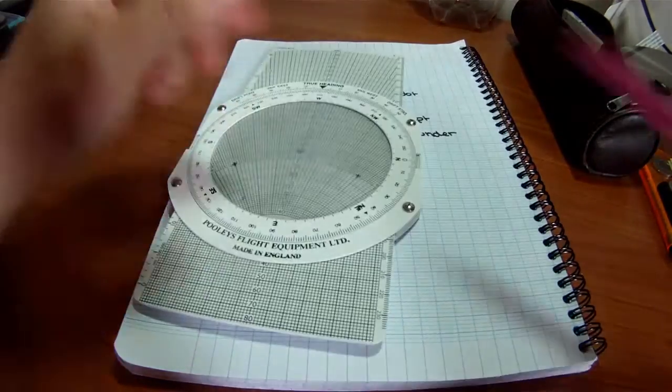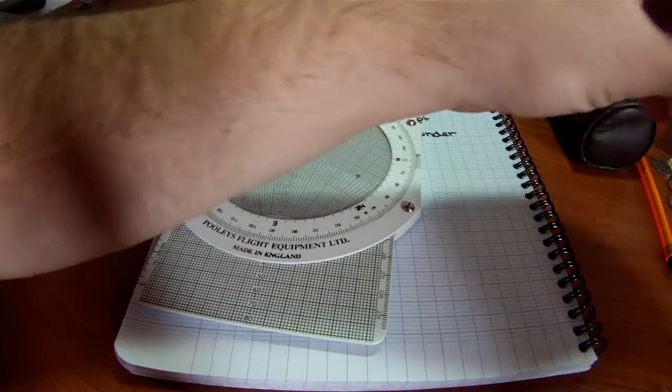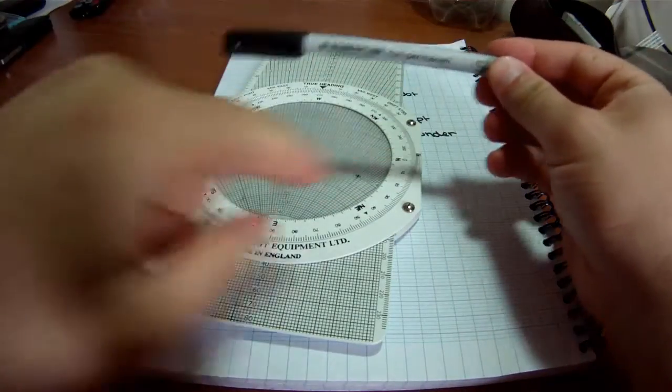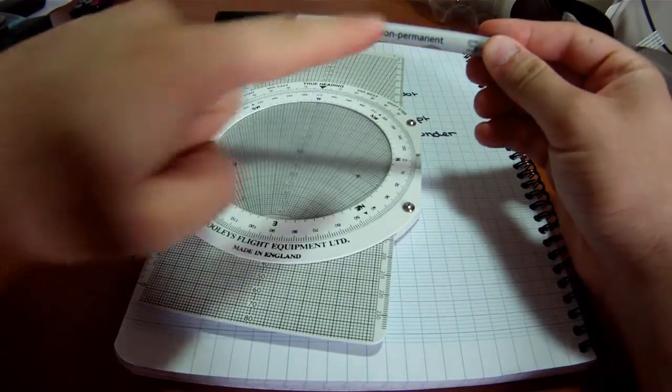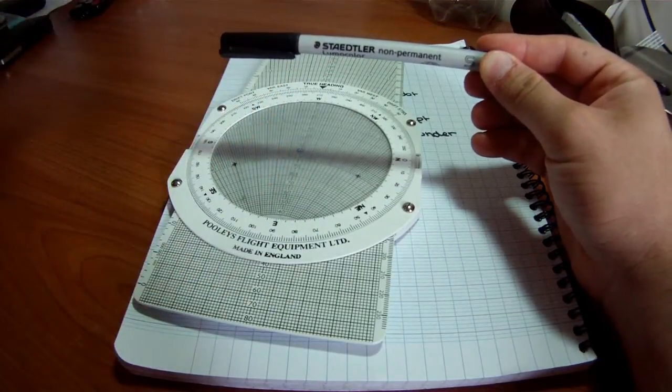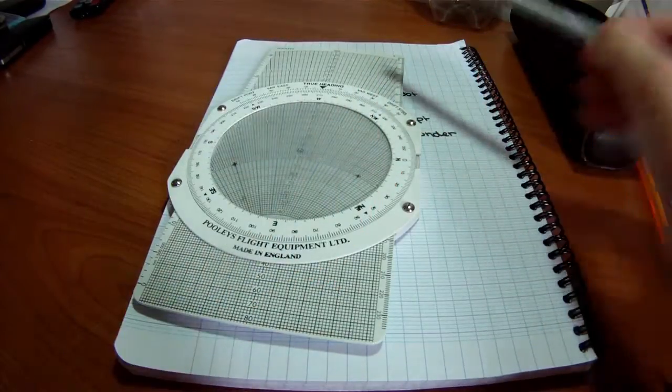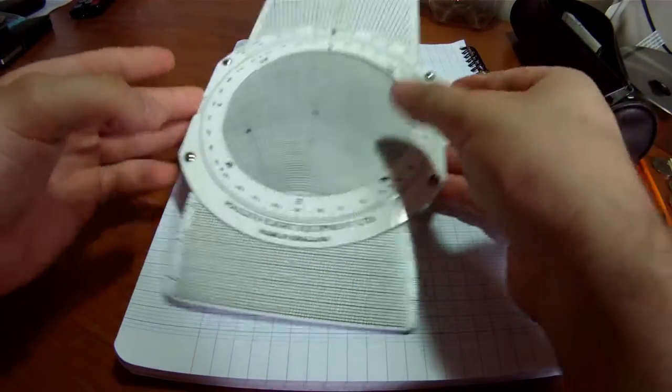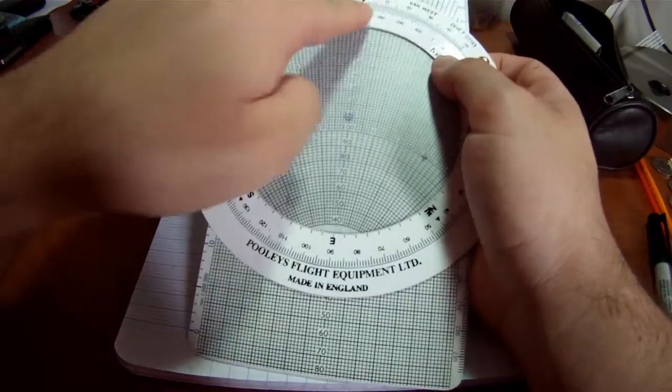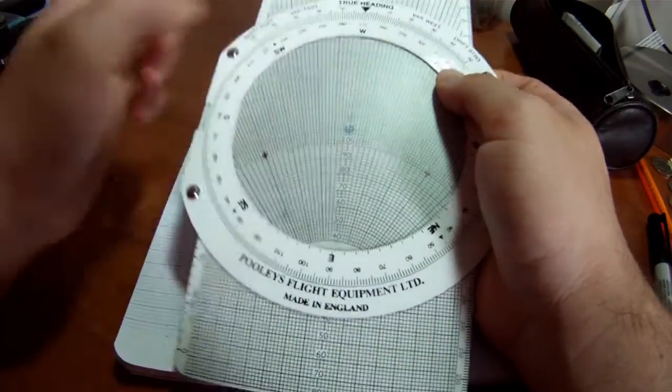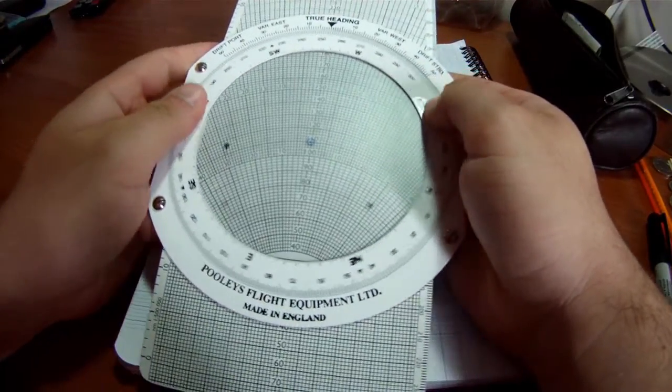Now think about it this way. If we're flying at a heading of 270 but our track is going along that way, then the wind will be coming from here from the left. Therefore, we're going to get a left drift and the actual heading of the wind should be less than 270.